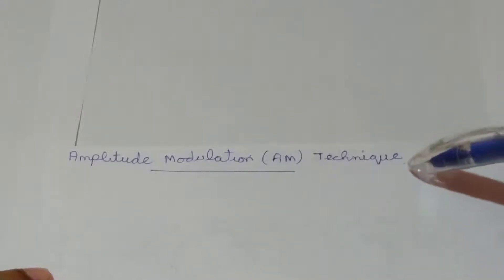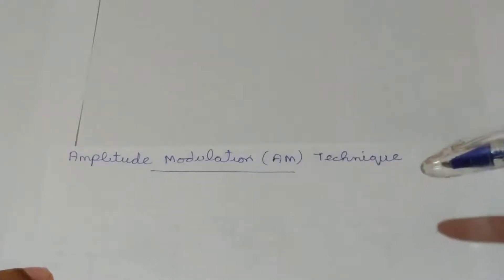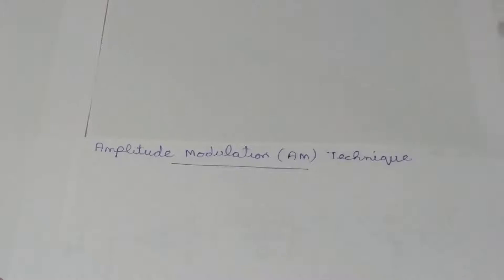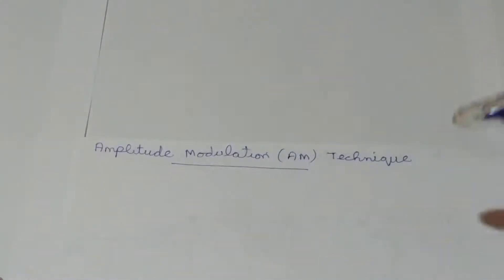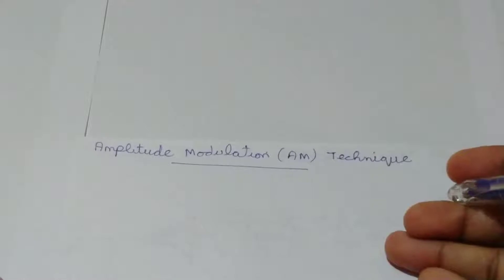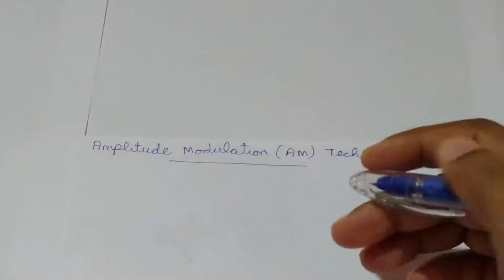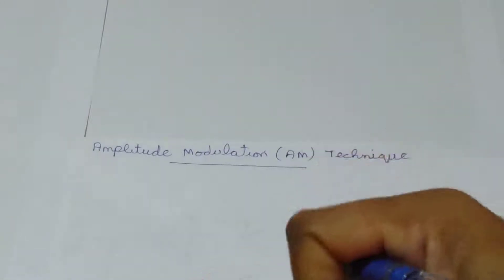Today we are going to discuss amplitude modulation technique. Before going into the details, let's first consider the need for modulation — why we use this modulation technique in our communication system. When we consider a communication system, we need to transfer information from one location to another, from the transmitter side to the receiver side. Our information signal is normally a low frequency signal.